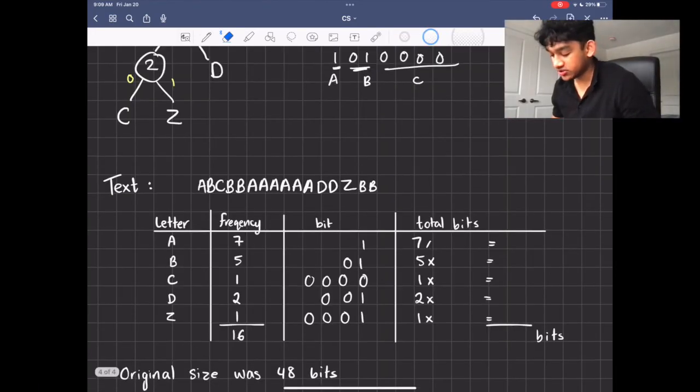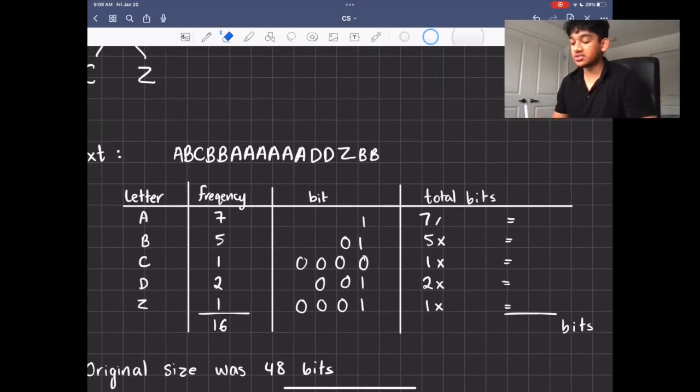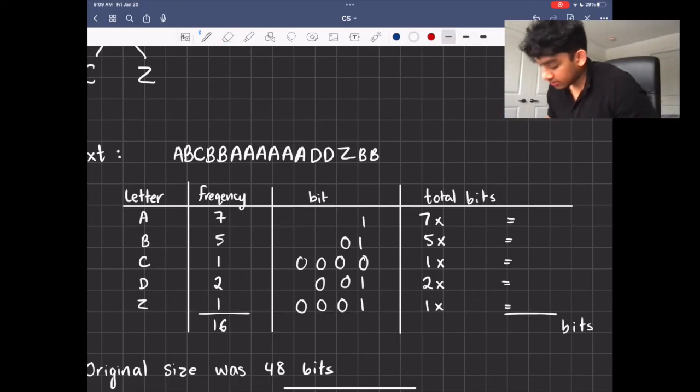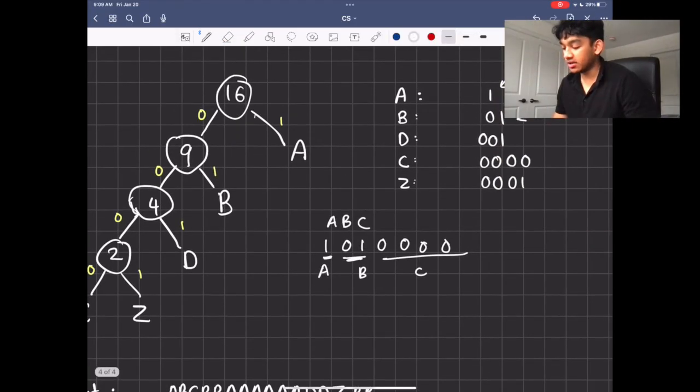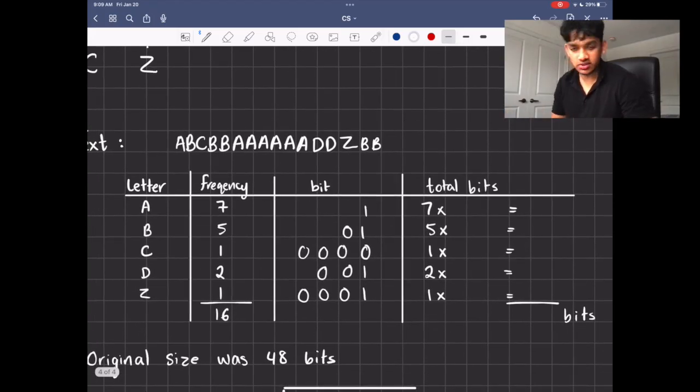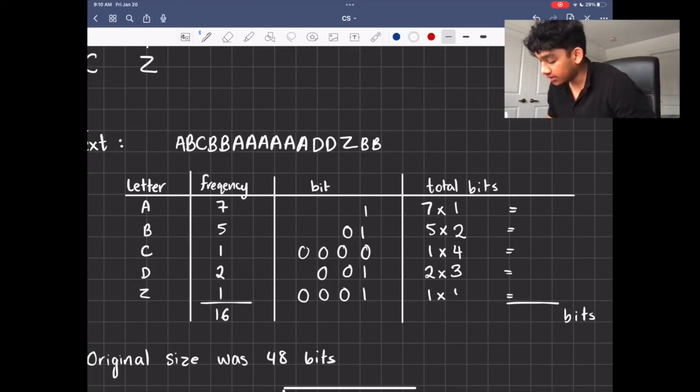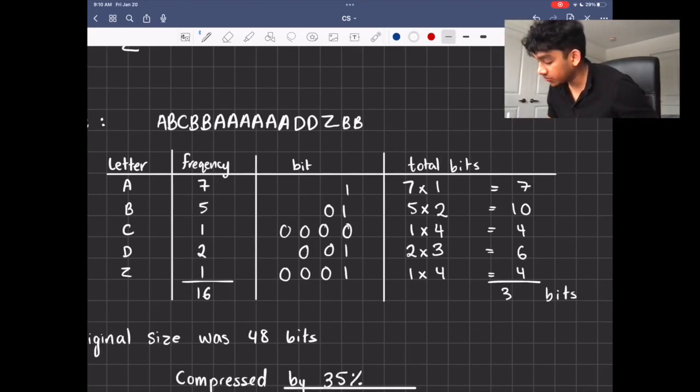So I made a table right here, just to make it a lot easier. And we have our letters, our frequencies, the bit, and the total bit size. So I just copied the legend right here, and we just put it down here. It's just more of a simple, easy to understand way. And A is one bit now. So the total number of bits it takes is going to be seven times one. B, it's going to be five times two, because there's two bits, zero and one. For C, it's 0, 0, 0, 0. So you're going to have four. For D, you're going to have two times three. And Z, you're going to have four again. If we add these up, we should get 31 bits.